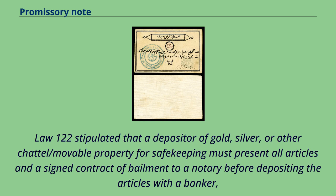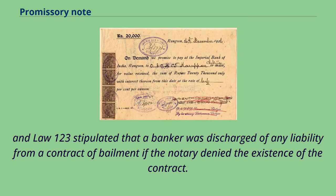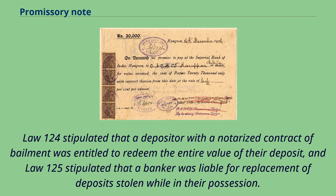Law 122 stipulated that a depositor of gold, silver, or other chattel or movable property for safekeeping must present all articles and an assigned contract of bailment to a notary before depositing the articles with a banker. Law 123 stipulated that a banker was discharged of any liability from a contract of bailment if the notary denied the existence of the contract. Law 124 stipulated that a depositor with a notarized contract of bailment was entitled to redeem the entire value of their deposit, and Law 125 stipulated that a banker was liable for replacement of deposits stolen while in their possession.